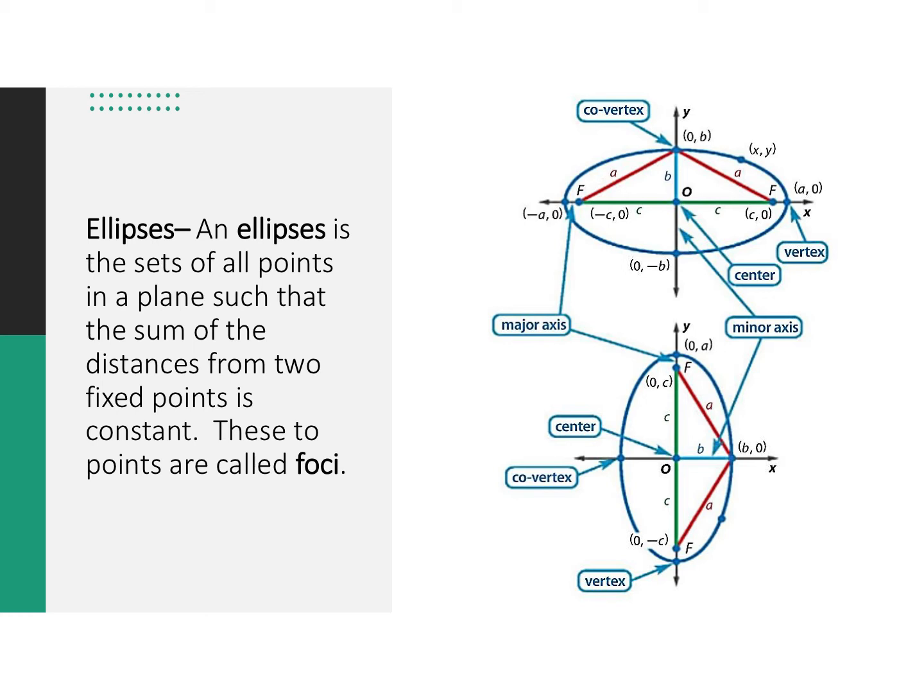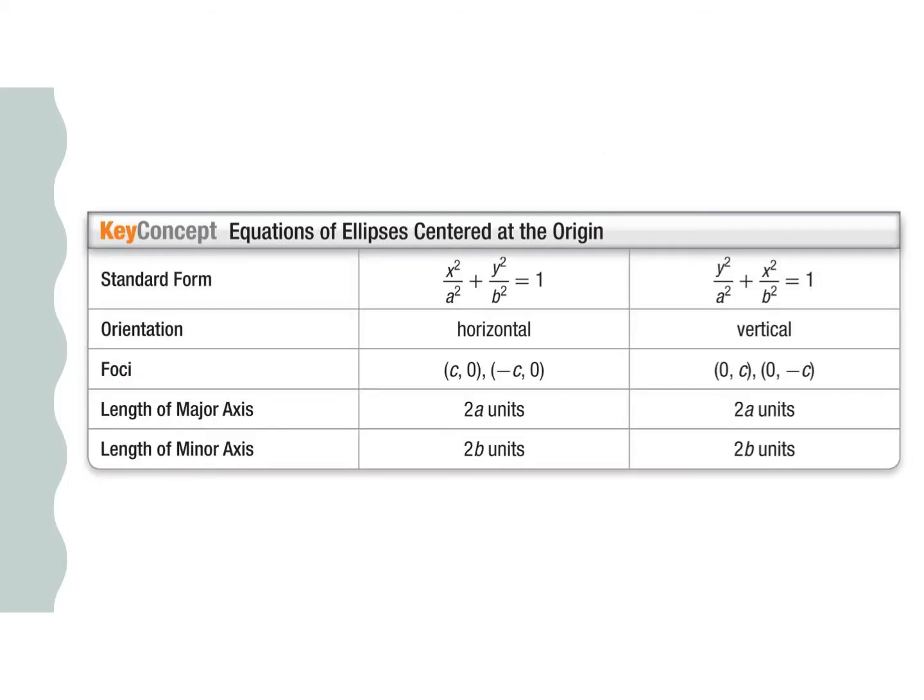These are the standard forms of an ellipse centered at the origin, meaning at (0, 0). Actually, this equation works for circles as well. So these are very similar to circles at the origin. And it actually is the same equation, except we're adding an a squared and b squared underneath both of those.